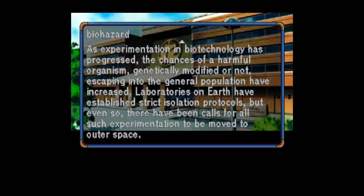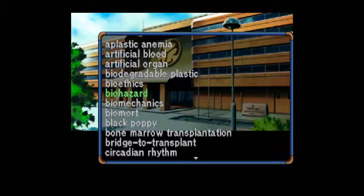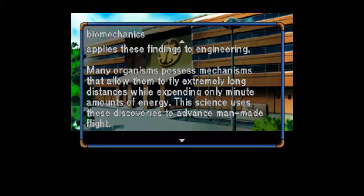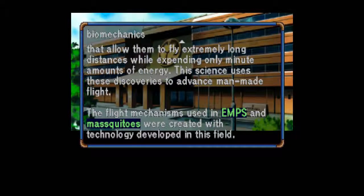See my Stasis and Cane playthroughs for stuff about biotechnology and manipulating biological beings — splicing things with other things and making horrible stuff. It's a much darker game than this. Biomechanics: A field of science that studies the flight mechanisms of animals and plants and applies these findings to engineering. Many organisms possess mechanisms that allow them to fly extremely long distances while expending only minute amounts of energy. This science uses these discoveries to advance man-made flight. The flight mechanisms used in EMPS and MASKITOS were created with technology developed in this field.